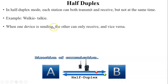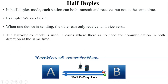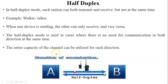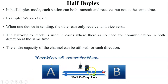When one device is sending data, the second device will receive the data and vice versa. This mode is used where there is no need for communication in both directions at the same time. The entire capacity of the channel can be utilized for each direction, because if user A wants to send data to user B, only one sender is in the network, so user A uses the maximum bandwidth of the channel.